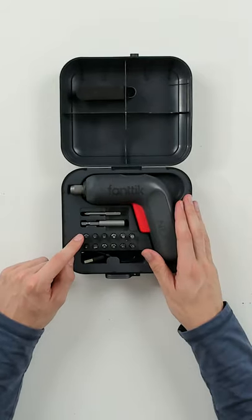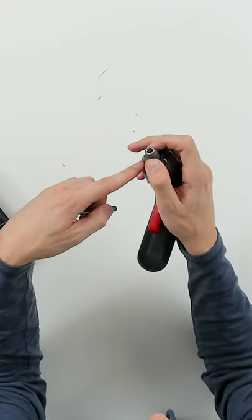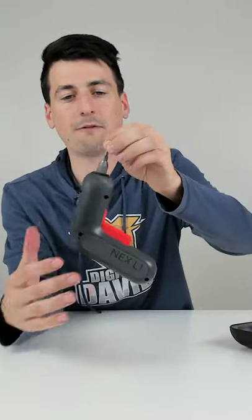Different accessories. Select the bit you want to use and get it installed in the screwdriver. Press this away from you, then drop your bit in place, release it, and now you can see it's not going to fall out.